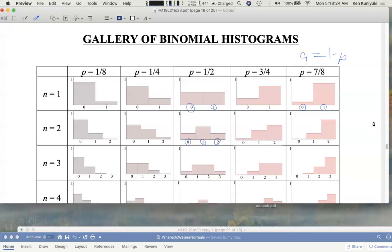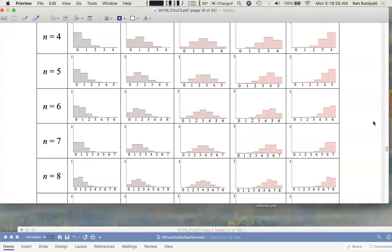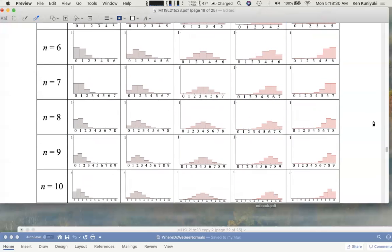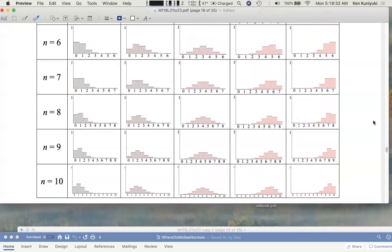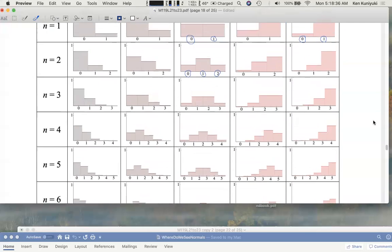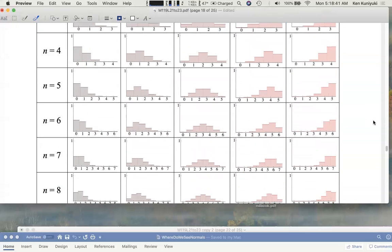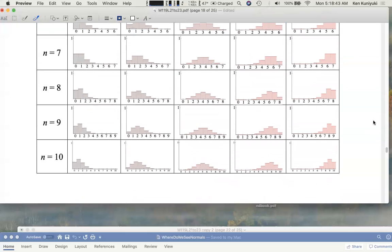So if we take this up to n equals 10, which of these 50 binomial histograms looks most normal? Take another view here. Which of these 50 histograms looks most normal, looks most bell-shaped?